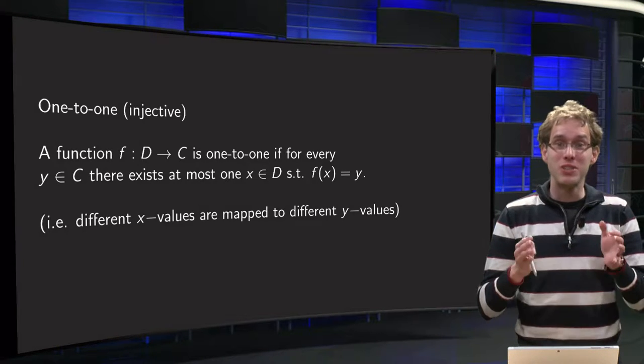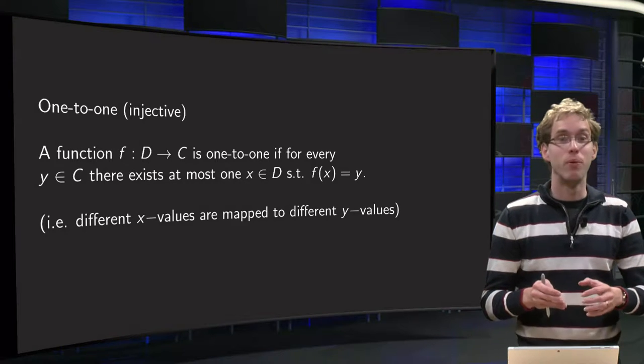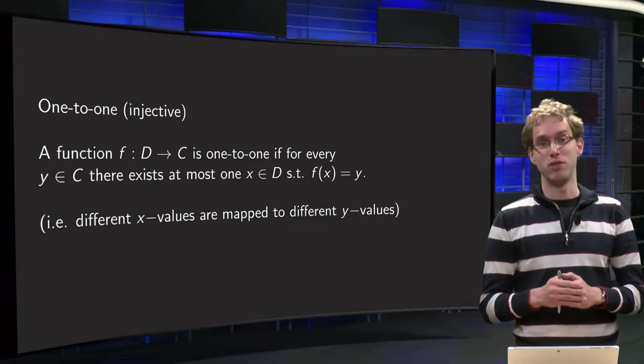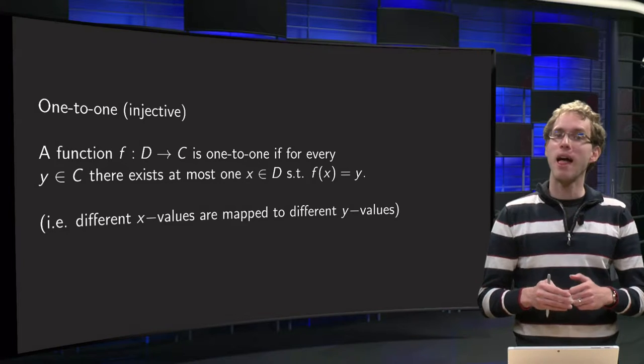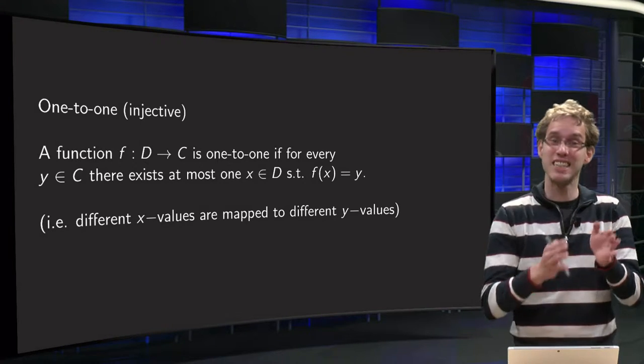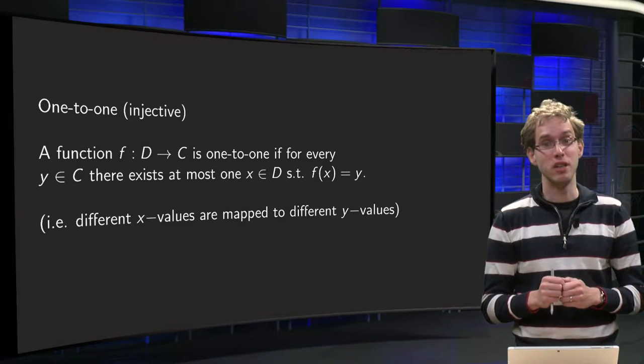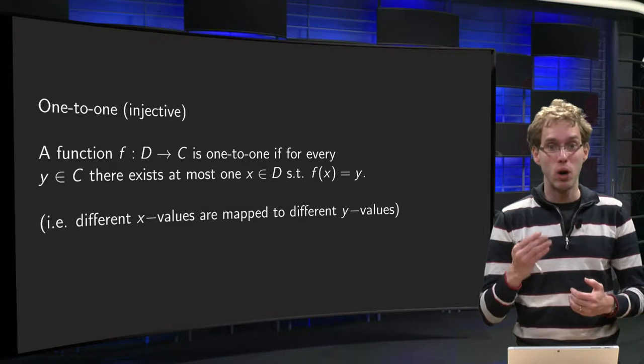One-to-one will tell us, together with onto, which we will discuss in another video, whether we can invert a certain function. And if you see a function as a relation between sets, its domain and its codomain, it is not difficult at all to see whether a function is one-to-one or not.